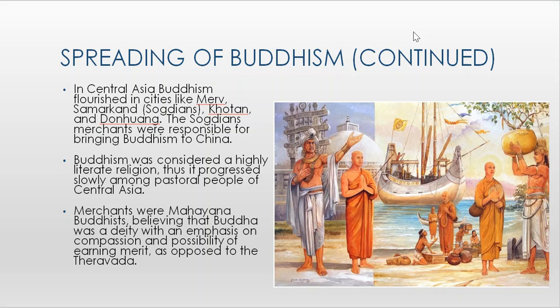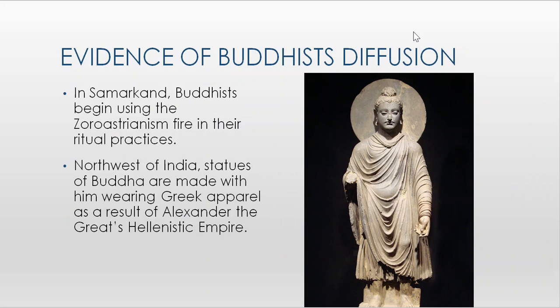In Central Asia, Buddhism flourished in highly mercantile cities like Merv, Samarkand, Khotan, and Dunhuang. The Sogdian merchants were responsible for bringing Buddhism to China. Buddhism was considered a highly literate religion and thus progressed slowly among pastoral peoples, who lived simpler lives less focused on the written word. Merchants were Mahayana Buddhists, believing Buddha was a deity with an emphasis on compassion and earning merit, as opposed to the stricter Theravada branch.